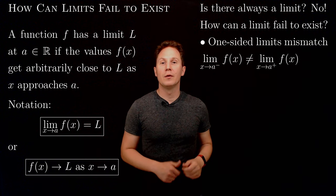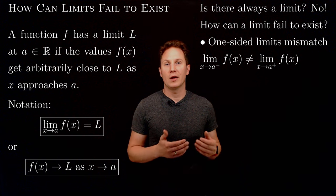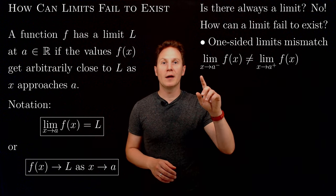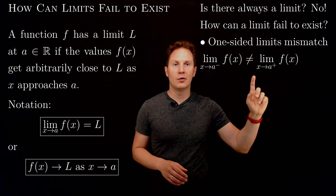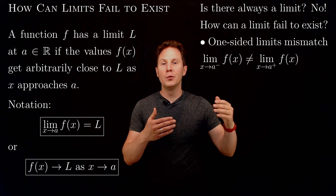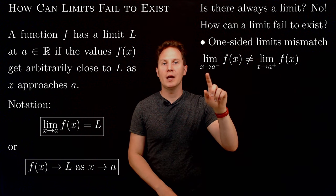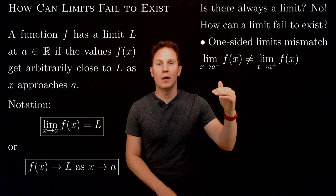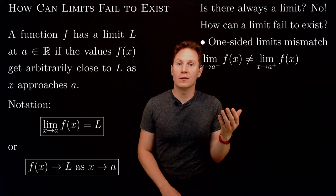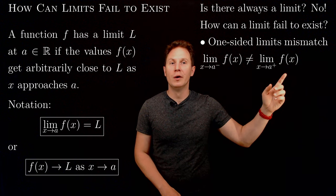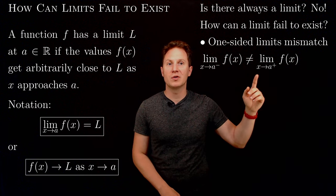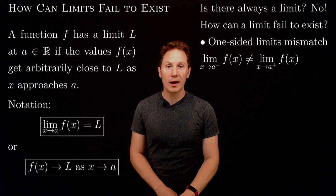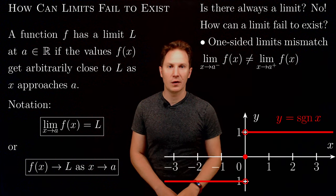For example, the one-sided limits as x approaches a could not be the same. The left-hand limit and the right-hand limit are two cases: when x approaches a from the left, f(x) may tend to a certain value, but this does not necessarily have to be the same value f(x) tends to when x approaches a from the right. If the one-sided limits do not match, the limit does not exist.